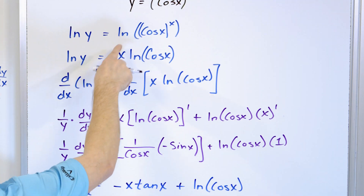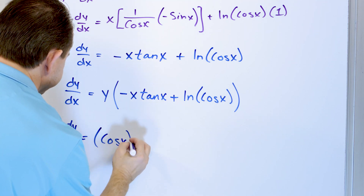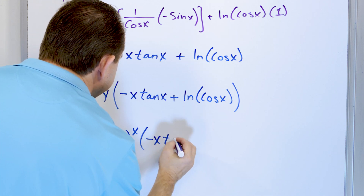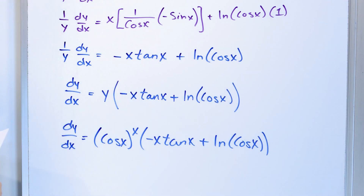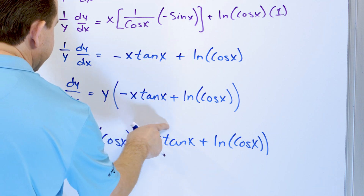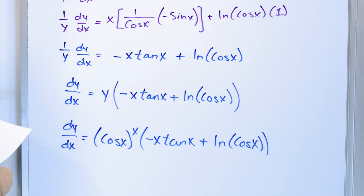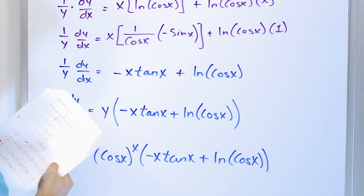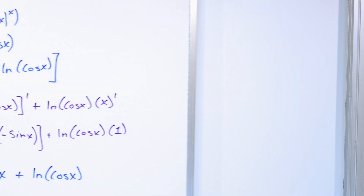Solving for dy/dx, we multiply both sides by y: dy/dx = y·[−x·tan(x) + ln(cos(x))]. Substituting back y = cos(x)^x, the final answer is dy/dx = cos(x)^x · [−x·tan(x) + ln(cos(x))]. It's an ugly answer, but using logarithms makes it much, much easier. This is logarithmic differentiation, and sometimes there are other ways to solve these problems, but logarithms often make it far simpler.